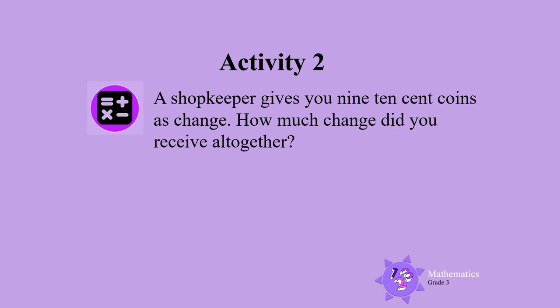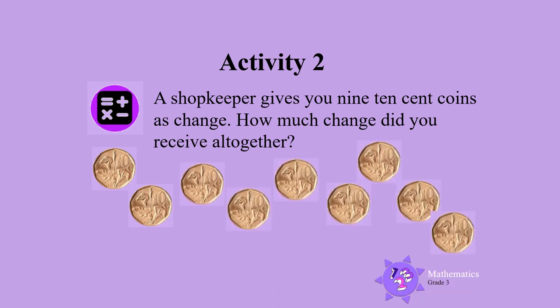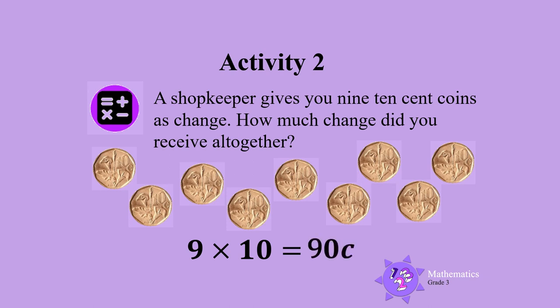Now you try. A shopkeeper gives you 9 ten cent coins as change. How much change did you receive altogether? Are you ready? You can write a multiplication number sentence like this: 9 times 10. This means we have 9 lots of 10. And 9 times 10 is 90. So you will have 90 cents.